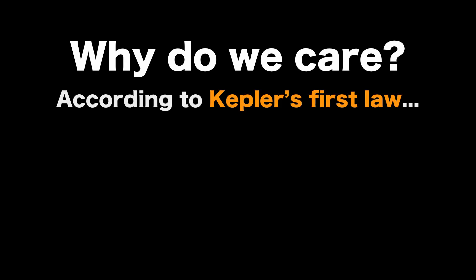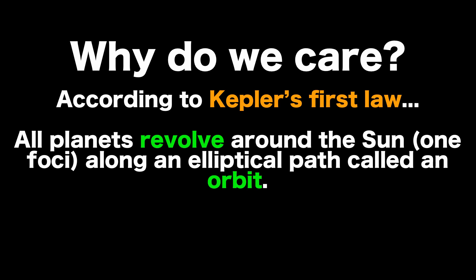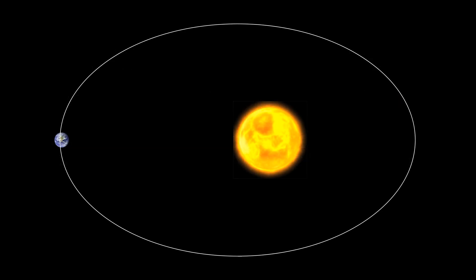So we care about this because this refers to Kepler's first law, which states that all planets revolve around the sun, which is one of the focal points along an elliptical path called an orbit. And you can see as the Earth is making its way around the sun, it's not a perfect circle, it's somewhat flattened.